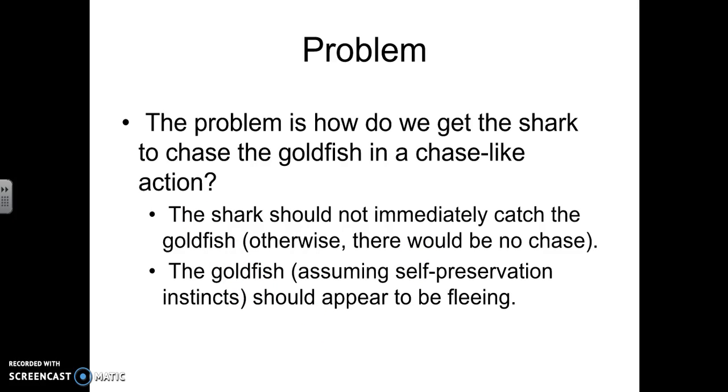The shark should not immediately catch the goldfish, otherwise there would be no chase. And the goldfish, assuming self-preservation instincts, should not appear to be fleeing. How does a programmer make all of this look realistic within the program as the code executes?